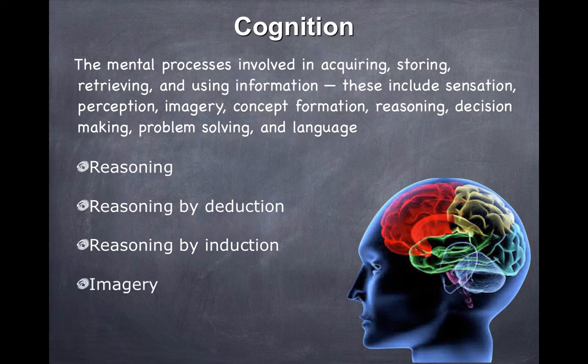And imagery, which is another important element about cognition, because much of what we do is about creating images, representations in the mind about sensory experience. We receive visual information. We receive auditory, gustatory.